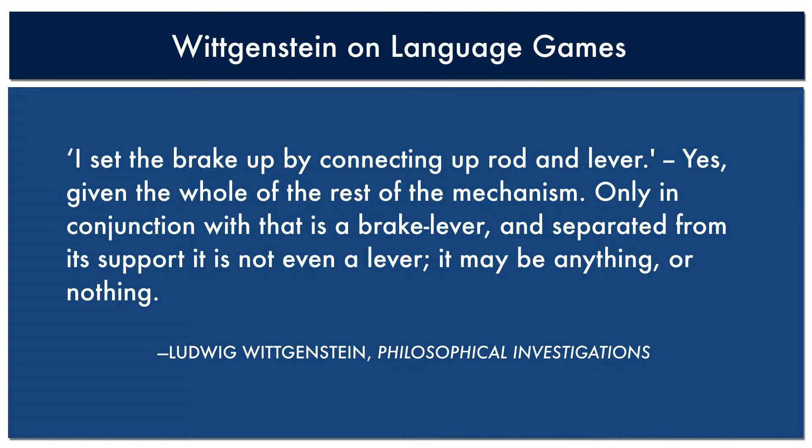Think of a complex process as a machine. The Austrian philosopher Ludwig Wittgenstein offers this insight about complex processes — pause the video to read it over. Wittgenstein is saying that no thing can be understood apart from other things. Even the simplest ideas are connected to other ideas. Wittgenstein uses the term 'language games' to refer to the cluster of related ideas that make up the larger whole.